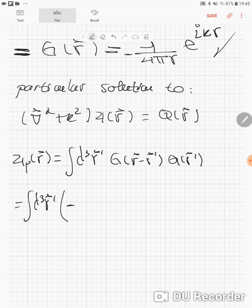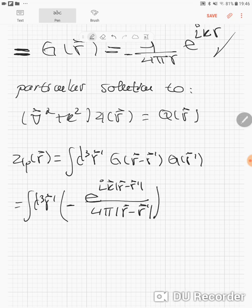It's e to the i kappa, or kappa better yes, times R minus R prime divided by 4π absolute value of R minus R prime plus the Green's function of R minus R prime.